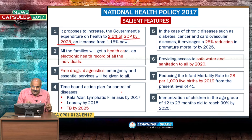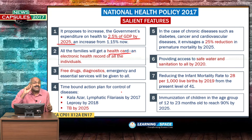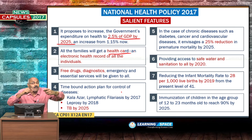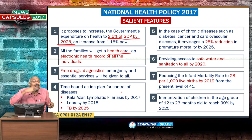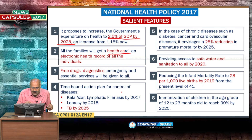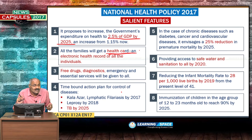Another landmark feature is the health card. All families will get a health card and an electronic health record. When an electronic health record is available, it will be a landmark development — if one goes to any hospital, that record can easily be accessed. The biggest issue is privacy policy; India needs a law for privacy as well as data protection. This universal health card is a landmark decision as per the National Health Policy.